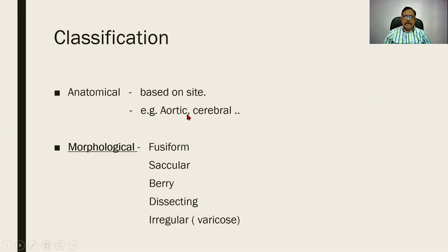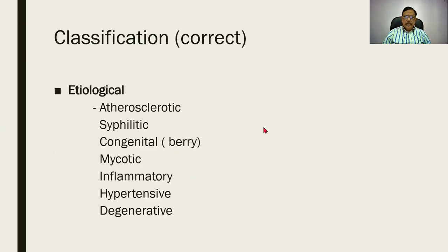Anatomically it can be based on the artery that is affected — it can be aortic or cerebral. Morphological, on the other hand, is based on shape and size, according to which you have a fusiform aneurysm, a circular aneurysm, a berry aneurysm, dissecting aneurysm, and irregular or varicose aneurysm. Etiologically, the most important are atherosclerotic, syphilitic, tangential, mycotic, and degenerative or dissecting aneurysm.